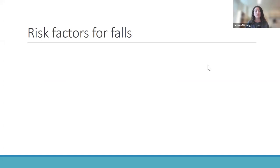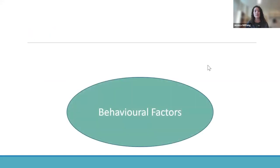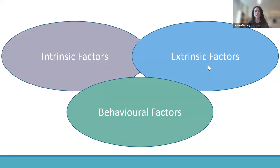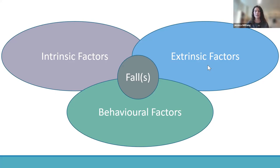There are three major categories of risk factors for falls: behavioral or activity-related factors, extrinsic or environment-related factors, and intrinsic or person-related factors. The cause of a fall or multiple falls may result from a complex interaction of risk factors, either between or within these different groups, making it quite difficult to identify those most at risk.